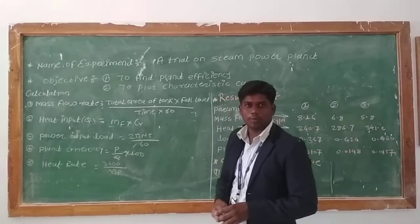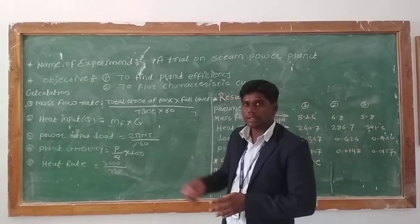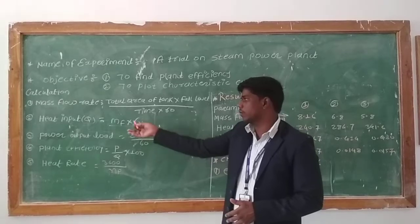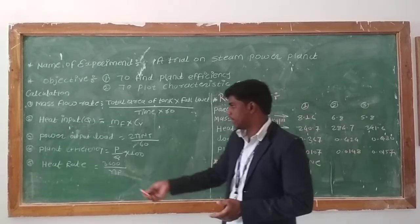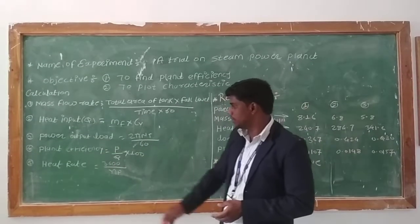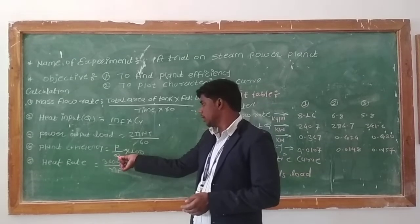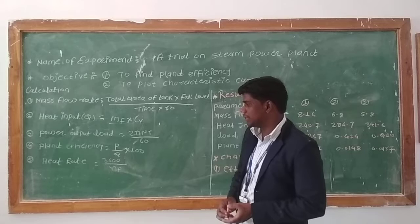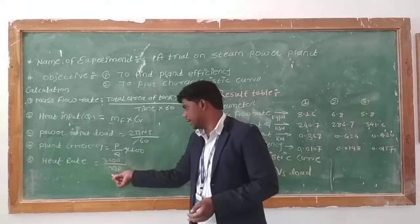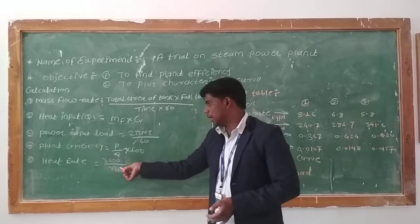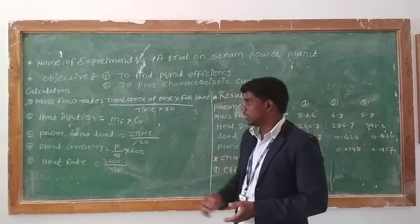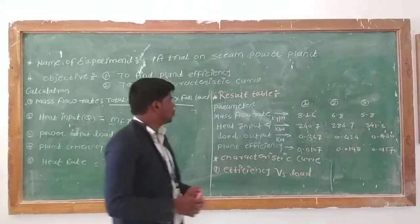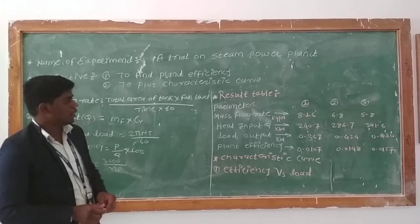Third is power output load: 2πNT/60. Fourth is plant efficiency: power divided by Q times 100. Last is heat rate: 3600 divided by plant efficiency. These are the various calculations from the observation table. Now move towards the results.